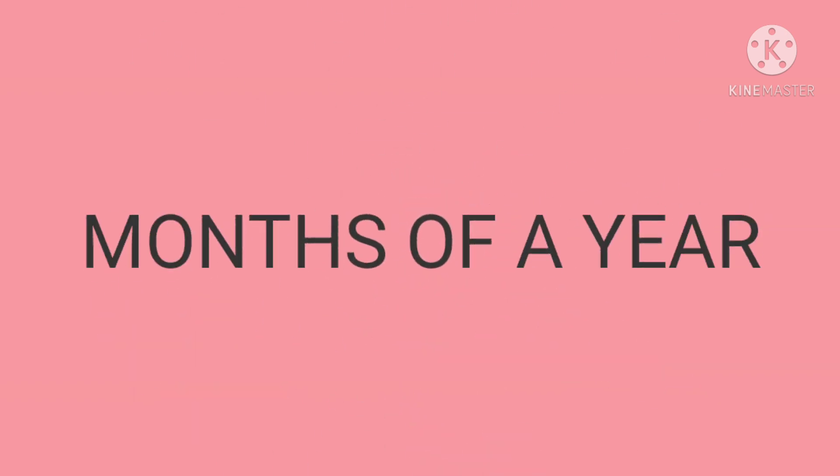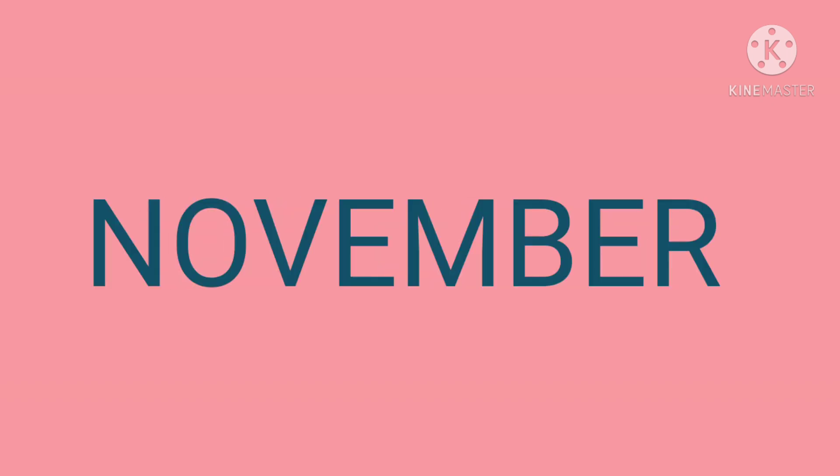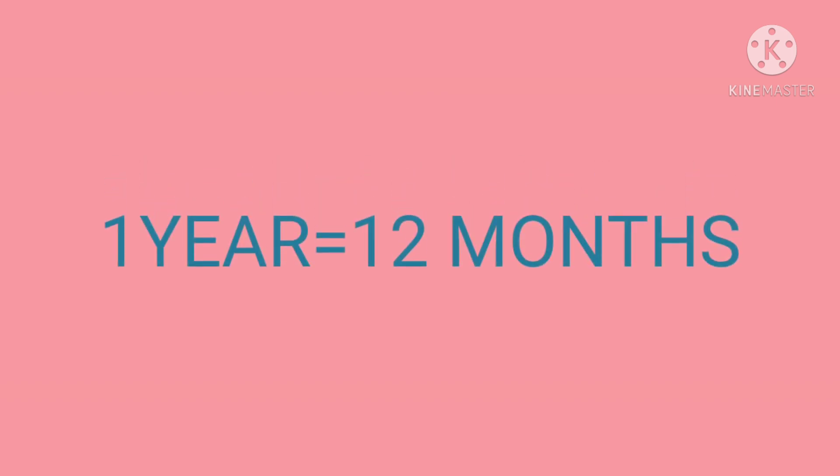Months of the year. There are 12 months in a year. They are January, February, March, April, May, June, July, August, September, October, November and December. Also, 1 year is equal to 12 months.